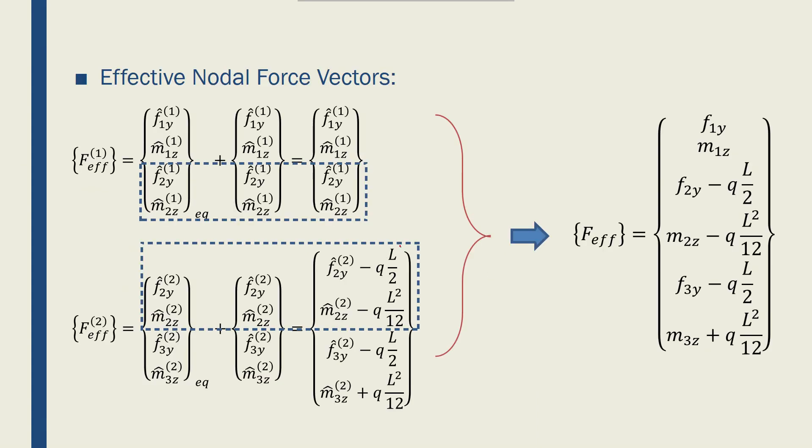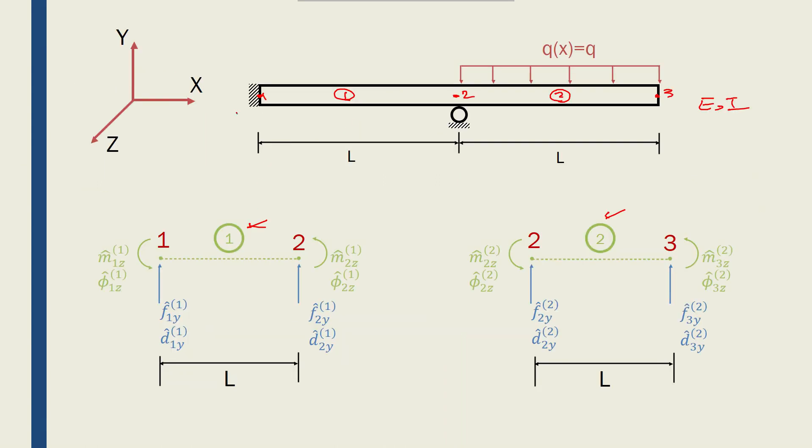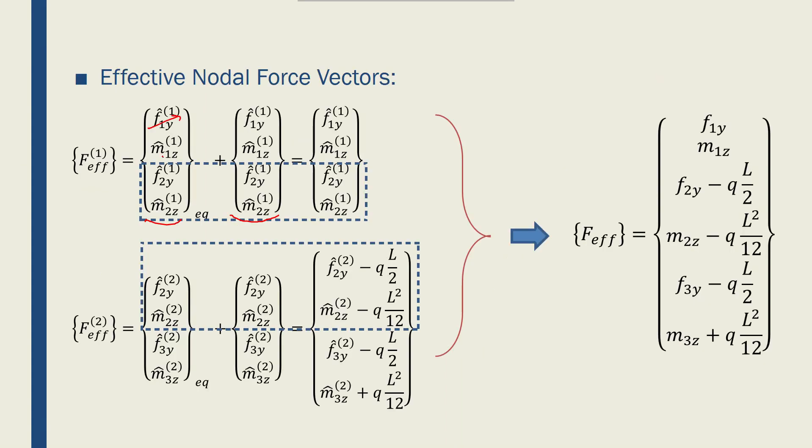The first thing I want to do is write the effective nodal forces for both elements. Effective nodal force equals equivalent nodal forces and the nodal forces that I'm looking for. However, element 1 does not have any distributed forces applied to it, so all of these components would be zero. The effective nodal force vector for element 1 would be basically the same nodal forces for element 1 that I want to solve for.